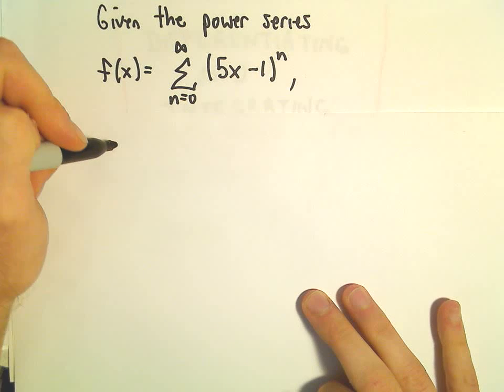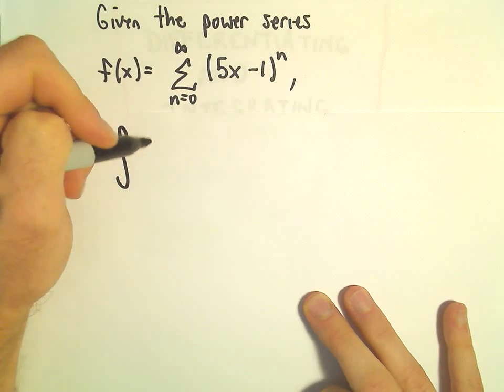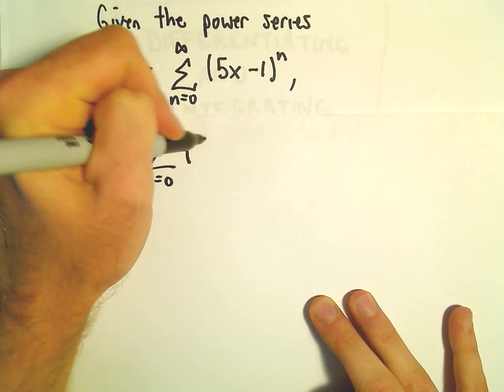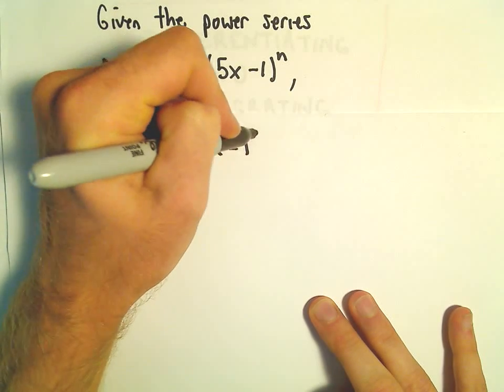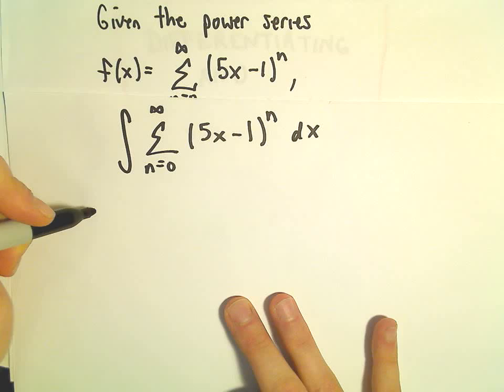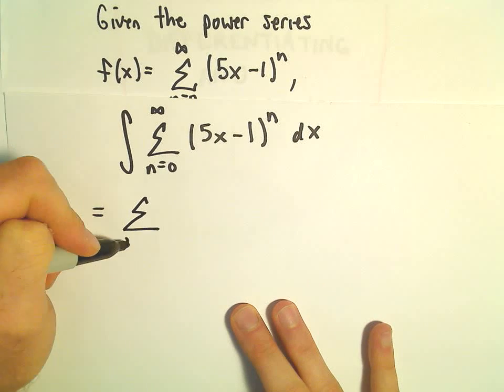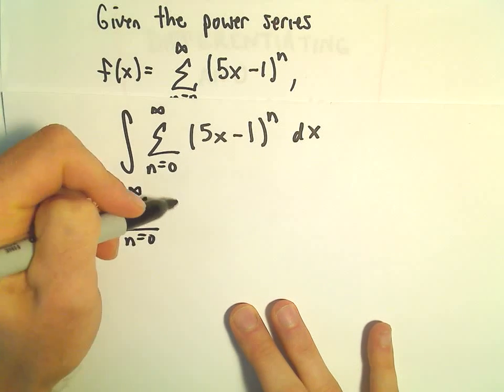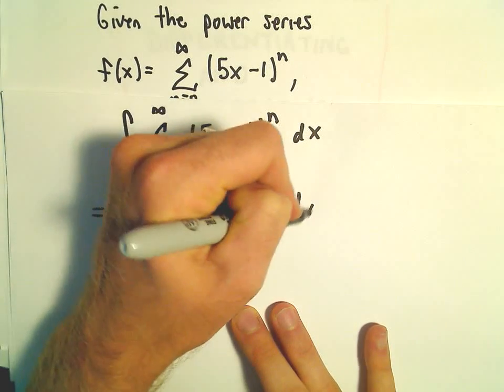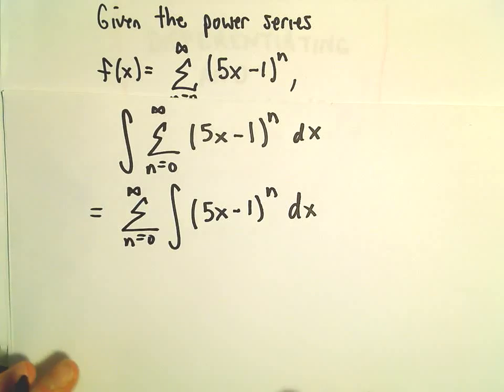Well, the idea is, so we want to find the integral of the summation from n equals 0 to infinity of 5x minus 1 raised to the n power. Again, integrating with respect to x. We can interchange the summation and the integral sign, though, which is an important little property that we can do that.